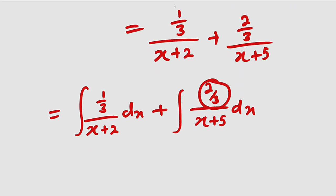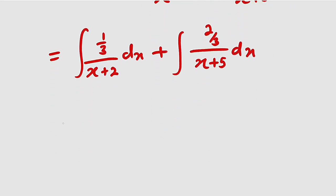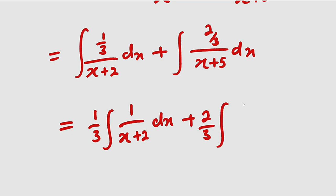We can bring this constant outside. The first one, we have 1/3, the integral of 1/(x+2) dx, plus you bring this out, 2/3, multiplied by the integral of 1/(x+5) dx.